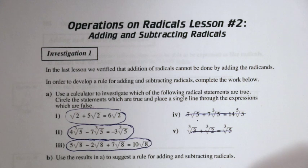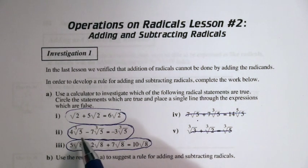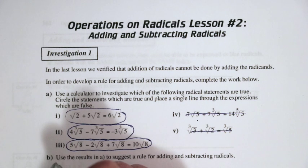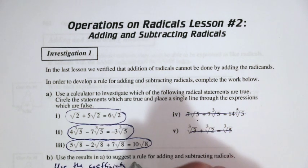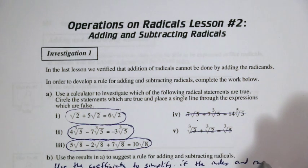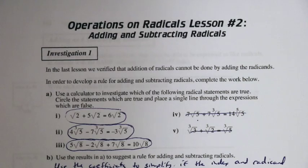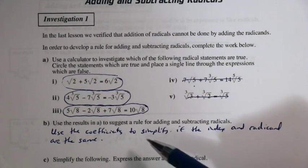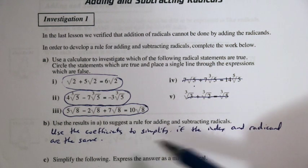So using these results, can we suggest a rule for adding and subtracting radicals? If the index is the same and the radicand is the same, we can treat it almost like a variable of the same quantity, and then we can use the coefficients to add. So we can use the coefficients to simplify if the index and radicand are the same, keeping both the coefficient and the radical quantity.